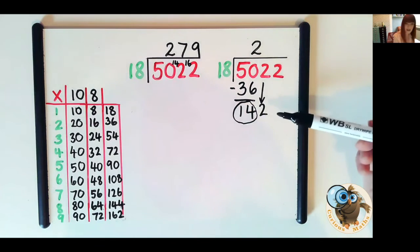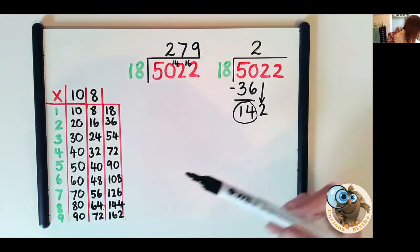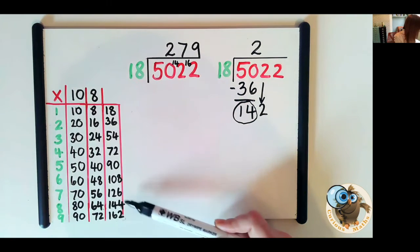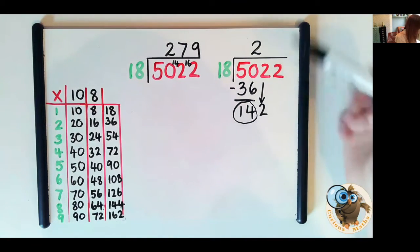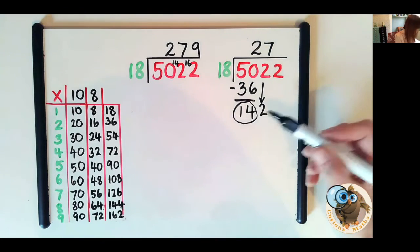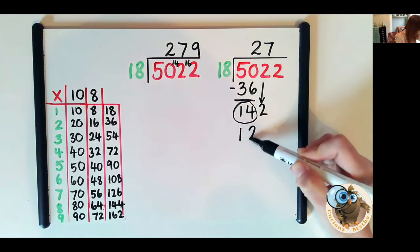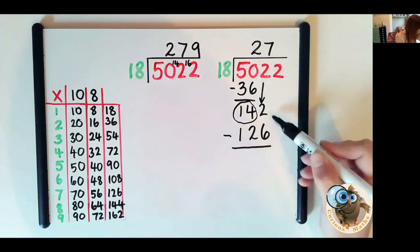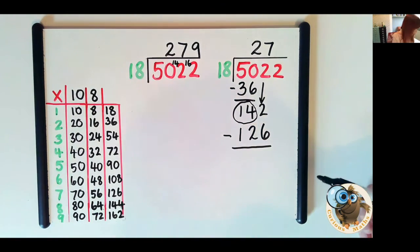So now we're doing exactly the same. How many 18s in 142? Let's use our chart. We can see eight 18s are 144 that's too many so let's have a look it must be seven. So we write our digit seven here, seven 18s are 126. We write that down in our long method and we take it away from the value above.